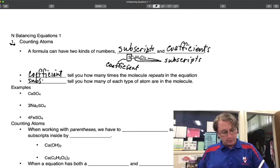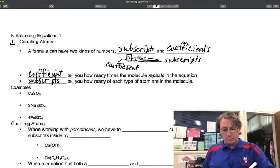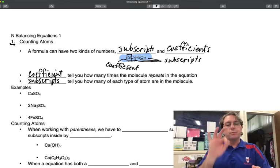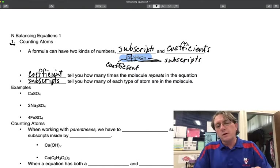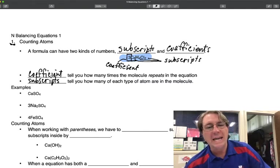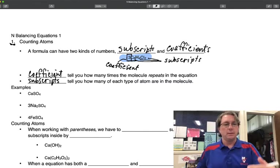What you need to know is that the coefficient tells you how many times the molecule repeats. Subscripts tell you how many of each type of atom are in the molecule. If I look at the six that's here, that means there are six carbons in the molecule. But the three, the coefficient, tells you I have three of those molecules. So to figure out how many carbons there are, I have to multiply them, so there are 18 carbons.